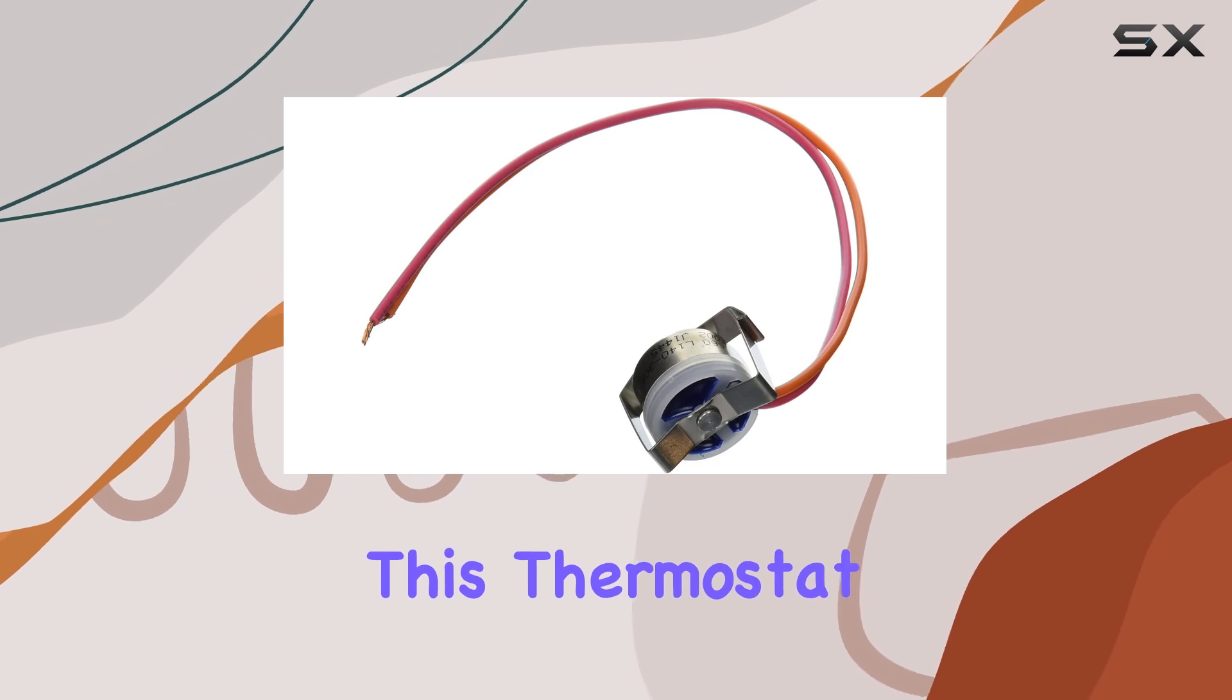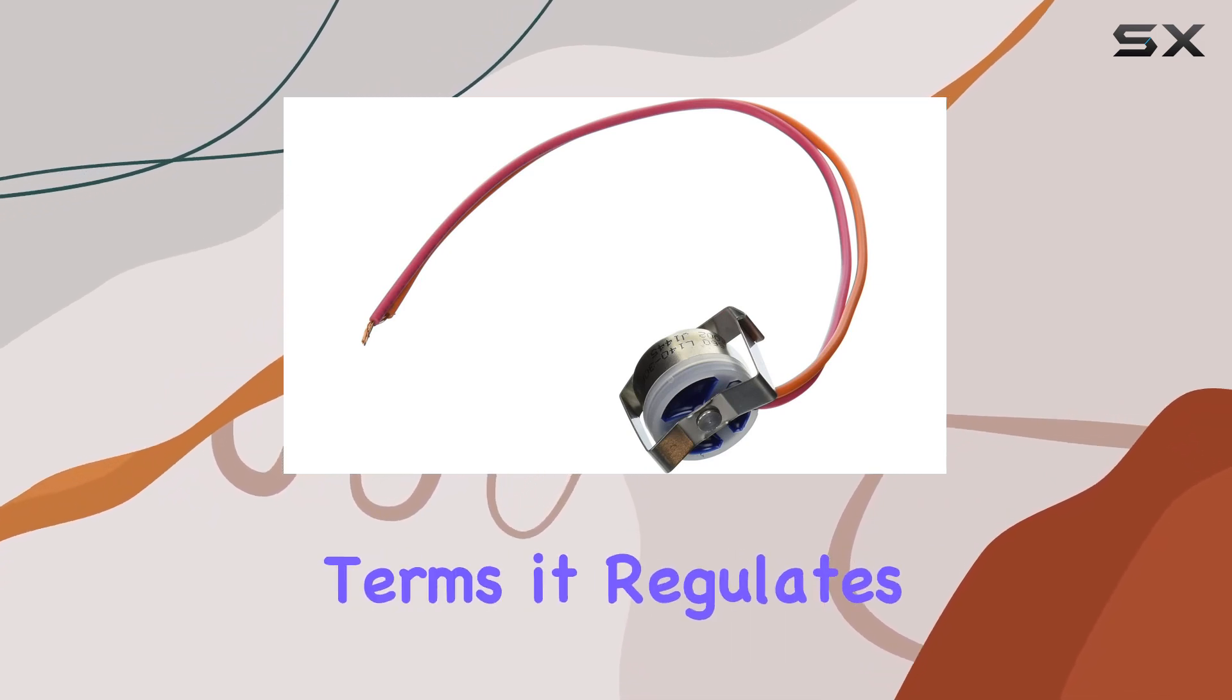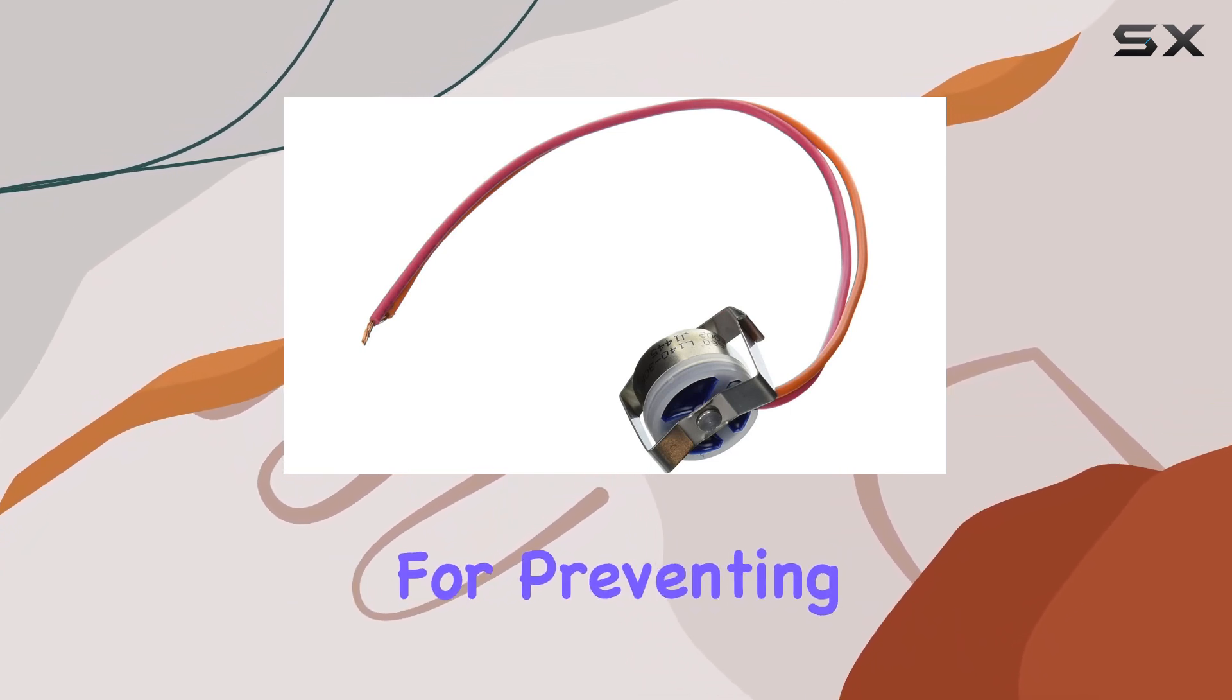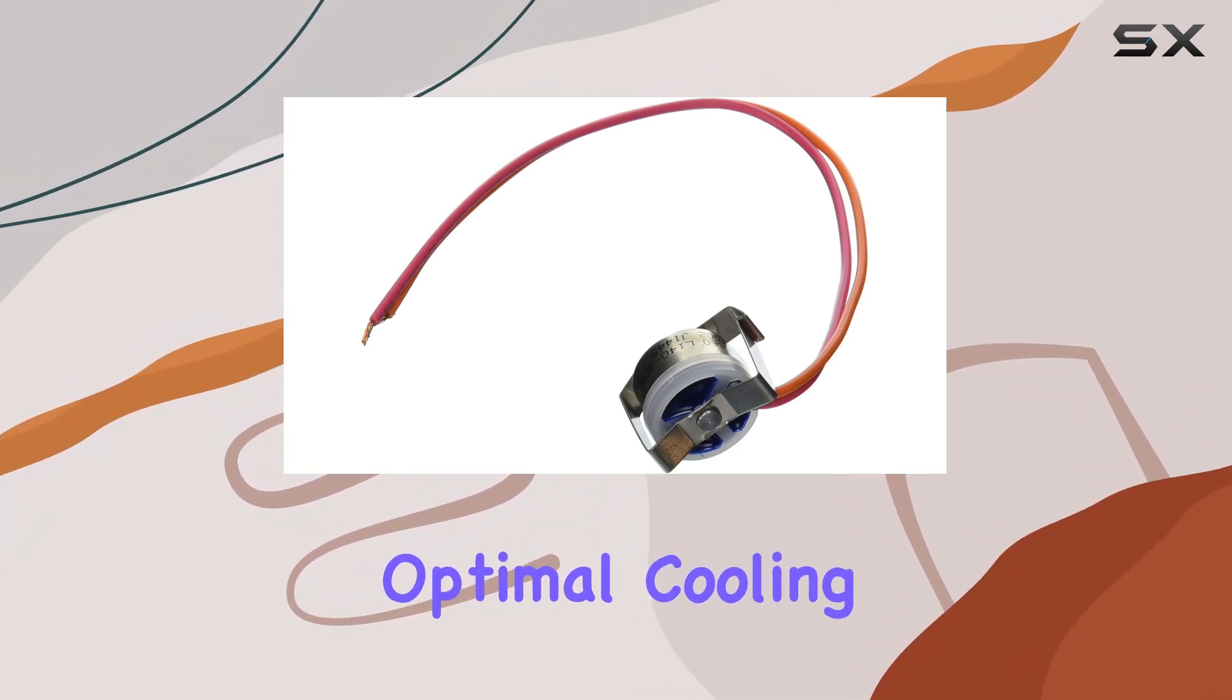Now, what does this thermostat do? Well, in simple terms, it regulates the temperature in your refrigerator's defrost cycle. This is essential for preventing ice buildup and maintaining optimal cooling performance.